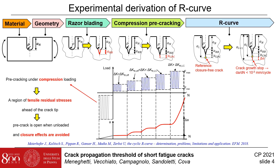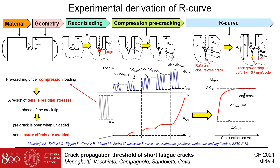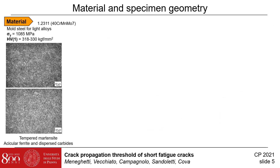A crack will initially grow at each step, but will then be arrested due to the build-up of closure mechanisms. Only when delta K reaches the long crack value, no arrest will take place anymore. A cyclic R-curve is then generated by connecting the delta A, delta K points of the consecutive arrest events. The material examined in this study is a 1.2311 mold steel for light alloys, with a yield stress of 1085 MPa and Vickers hardness between 318 and 330.